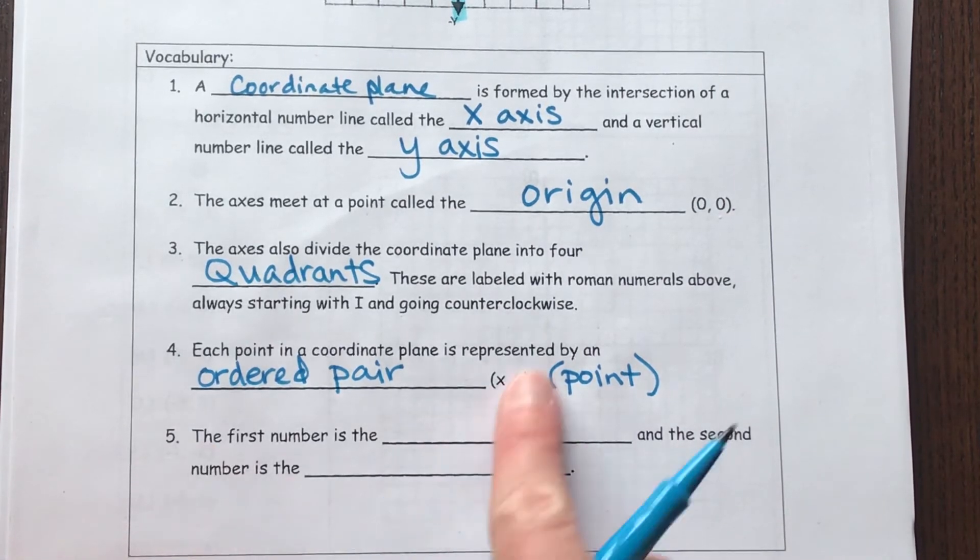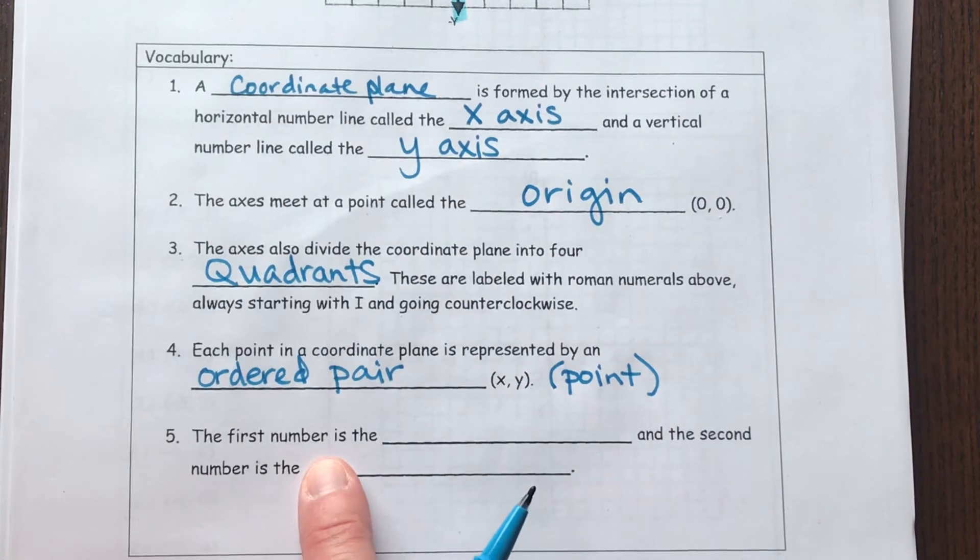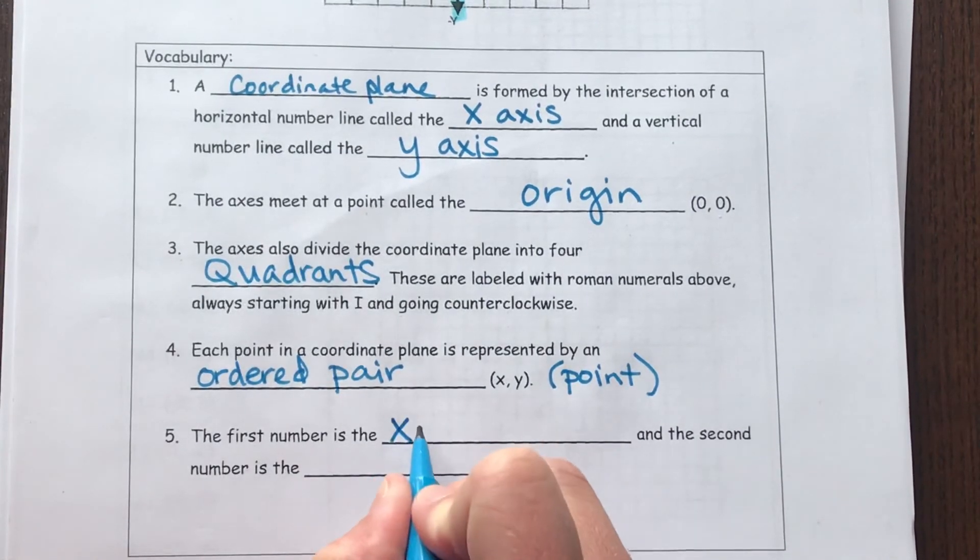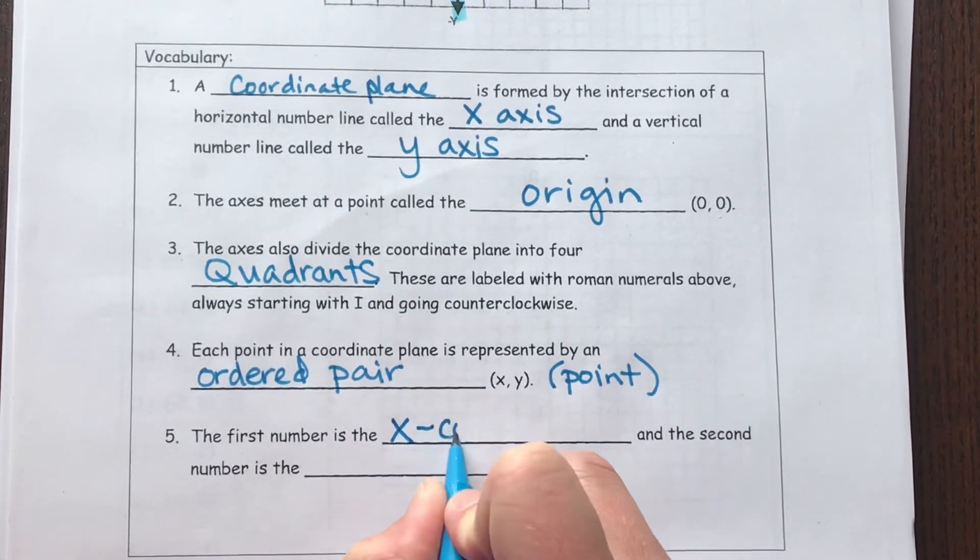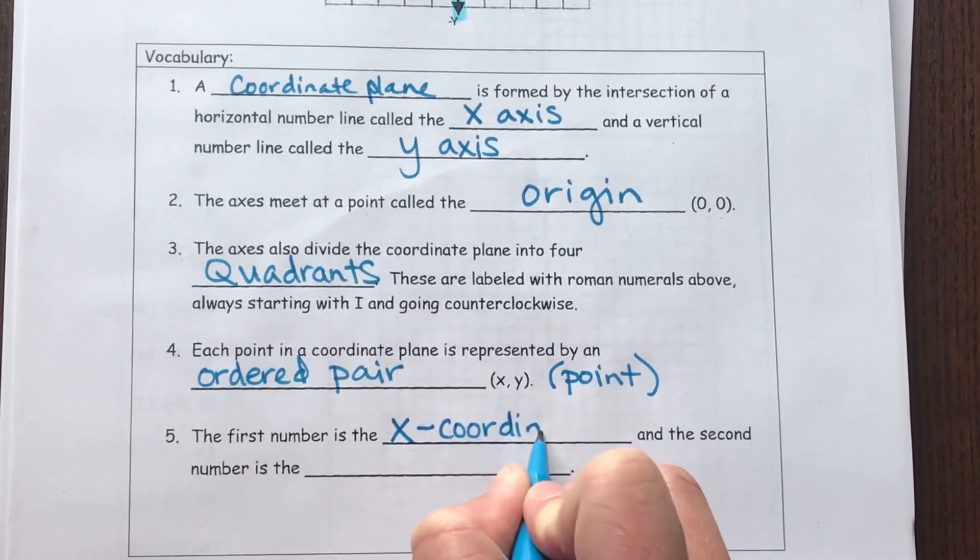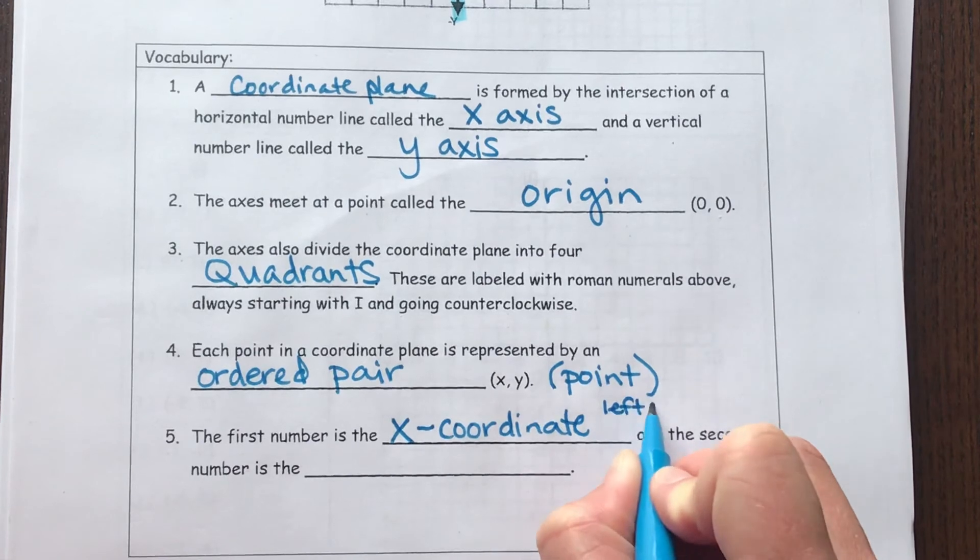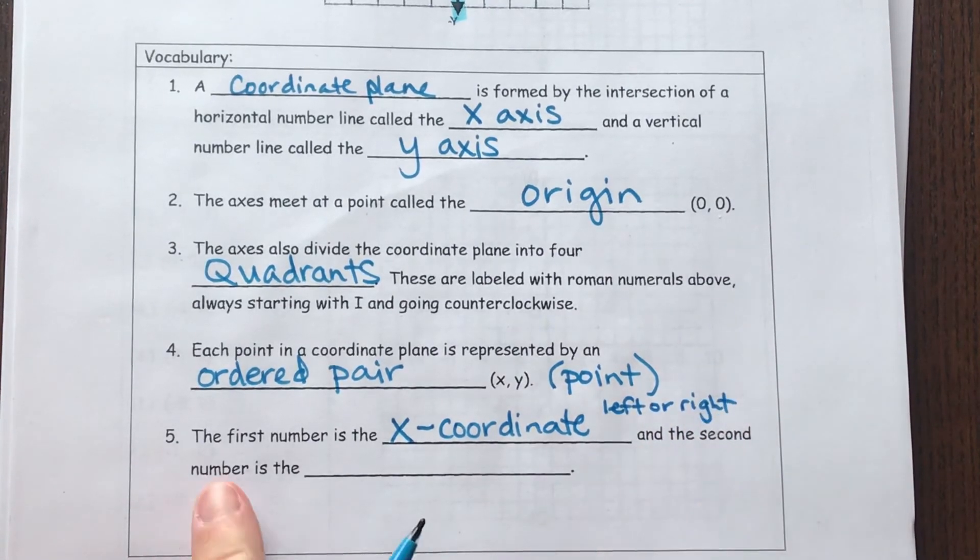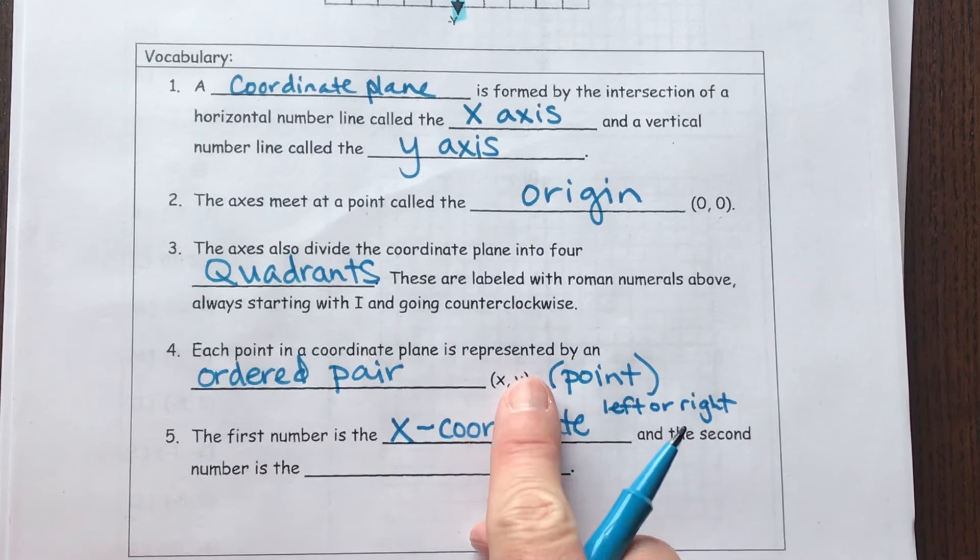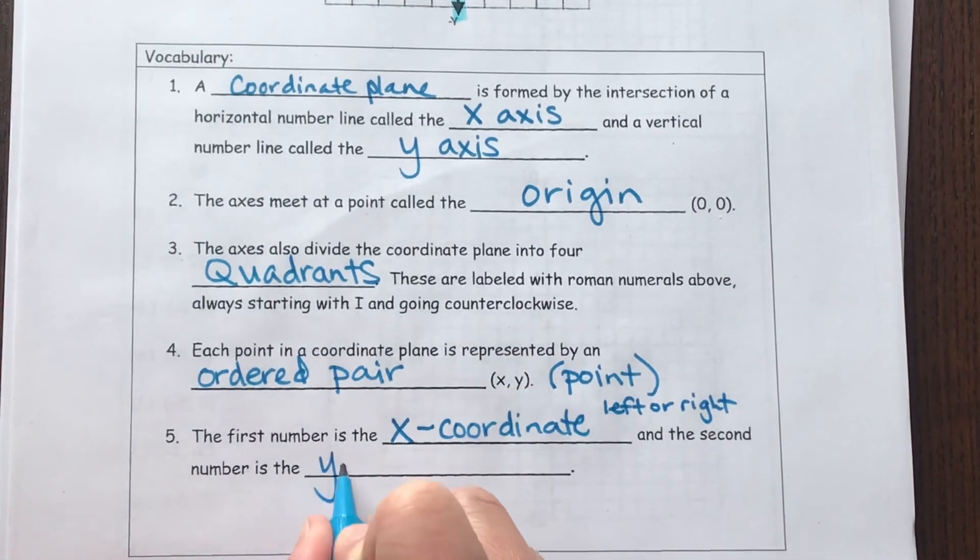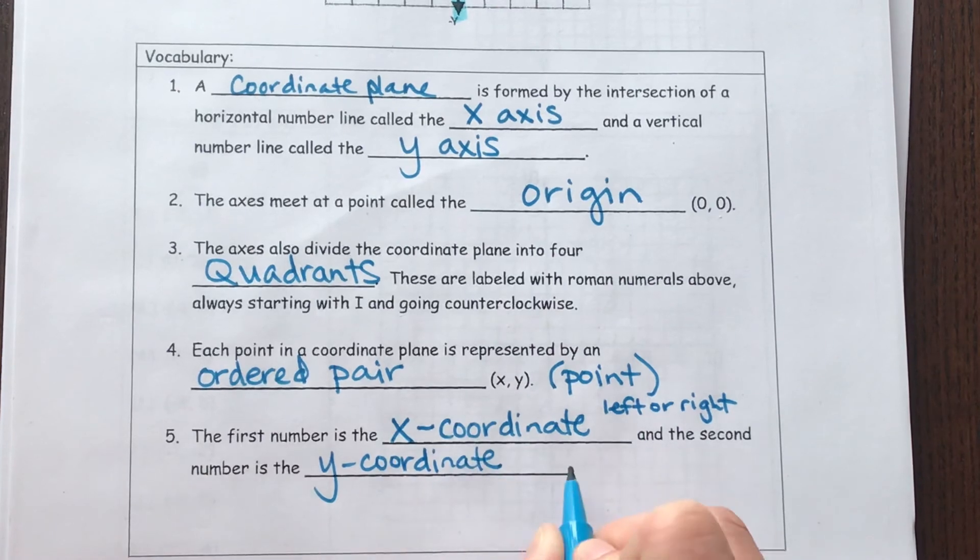The fifth thing that I have here for our vocabulary would be that the first number goes in the X direction. It's the X coordinate, which will actually tell you if you're going to go left or right. And then the second number in this ordered pair is the Y coordinate, and that is going to tell you whether you go up or down.